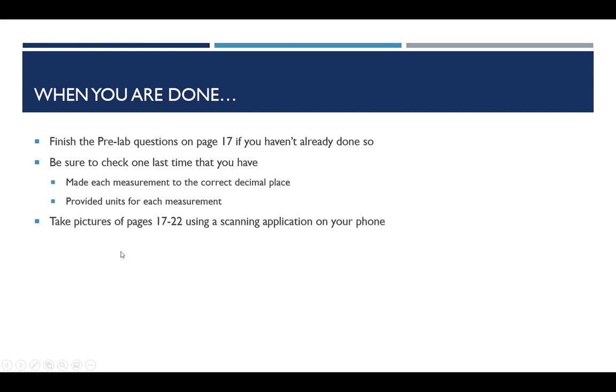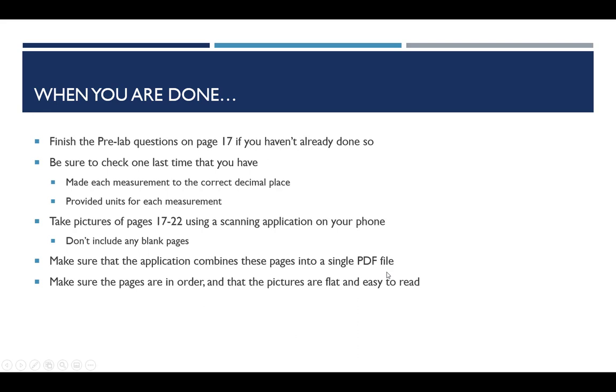Just like you did with experiment 1, you're going to take pictures of only the report sheets and the pre-labs. So that's page 17 through 22, but don't include page 18, which is a blank page. We don't need to see a blank page. And then those pictures need to be combined into a single PDF file. Make sure that the pages are in order and that the pictures you've taken are flat, easy to read, preferably torn out of the book.